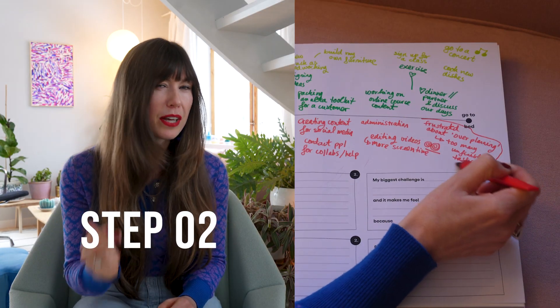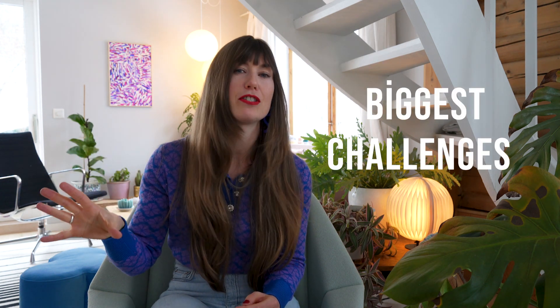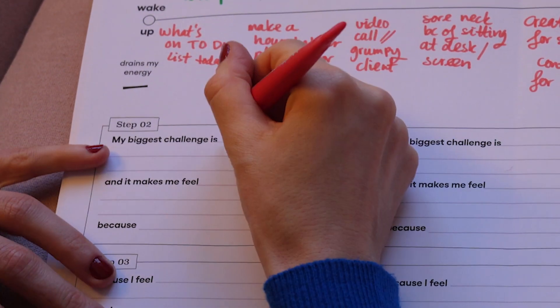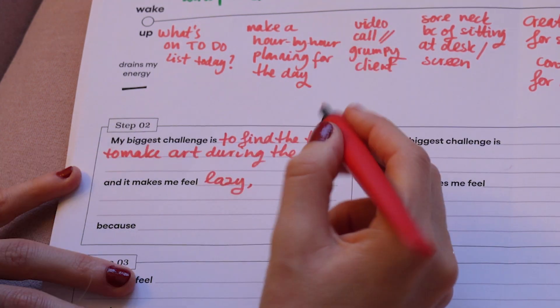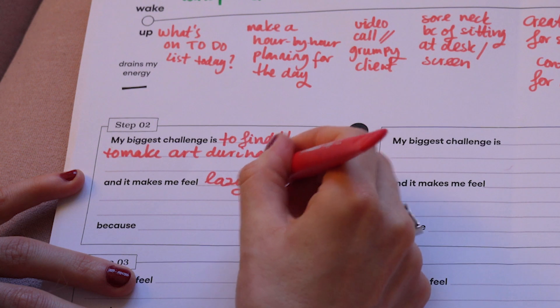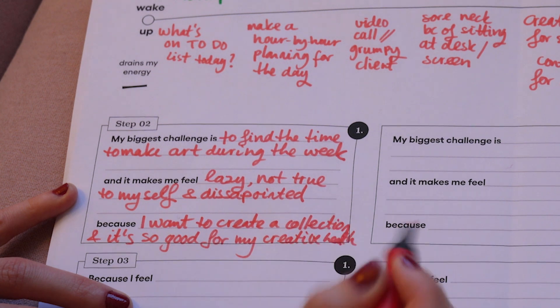Now that you have created a clear picture of all of your activities, I want you to take a moment to go through them all and pick three things that you experience to be your biggest frustrations or challenges during your day. Next, I want you to define these three biggest challenges by describing how they make you feel and why they make you feel this way. You can do this by filling in the blanks of this sentence: My biggest challenge is [blank] and it makes me feel [blank] because [blank].